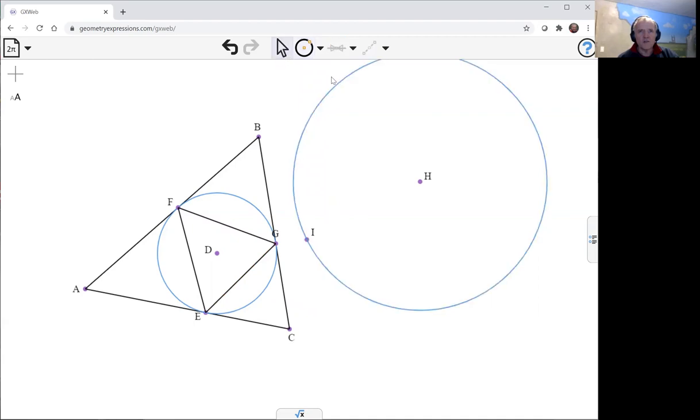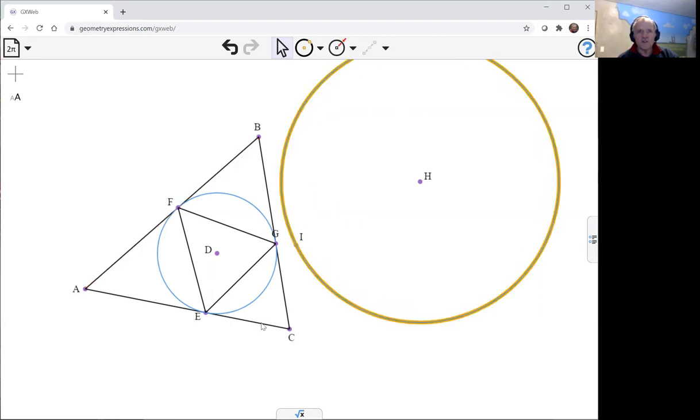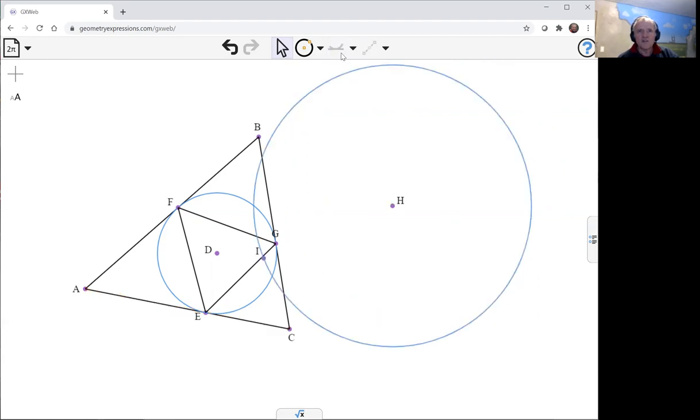I'm going to use the tangency constraint to make it tangent to these three sides. So there's tangent to one side, tangent to another side, tangent to the third side.